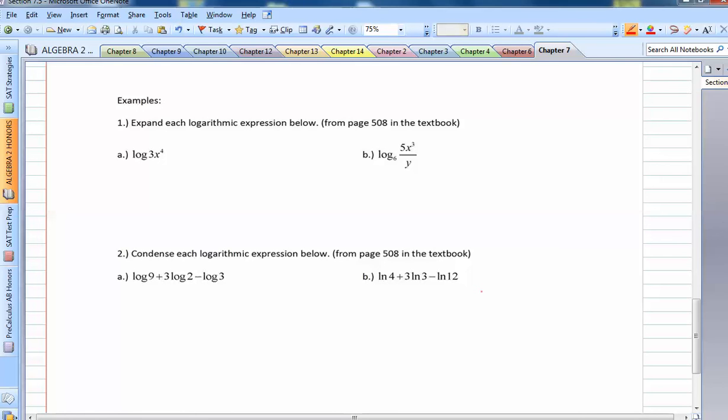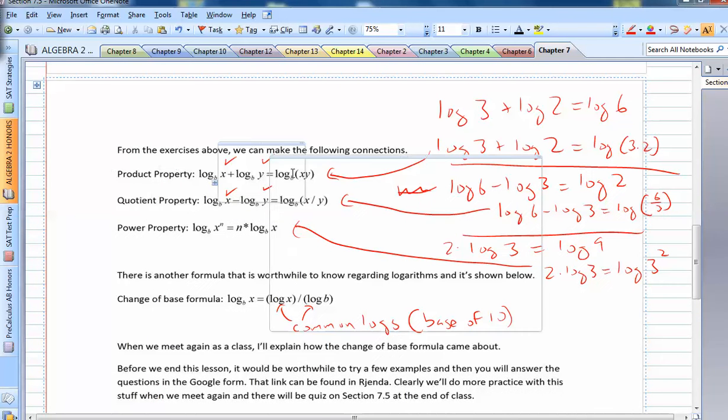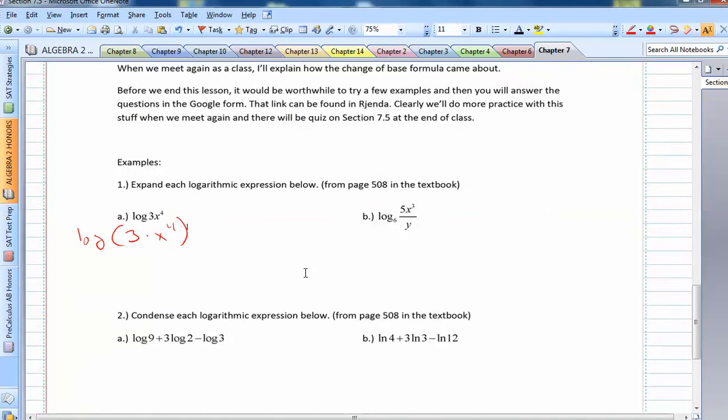So here are the examples. You're asked to expand each logarithmic expression below. This is from page 508 in the textbook. So here is the deal. We have a single log, and we see how 3 is being multiplied to x to the 4th power. Well, going back up, we see from the product property that if you have two things being multiplied and there's a log connected to it, you can break it apart into two separate logs. So in this case, I can say log 3 plus log x to the 4th. And because I have an exponent, I can use the power property and write it like that. So that's how we would expand that problem.